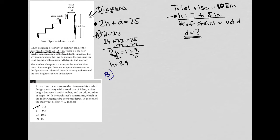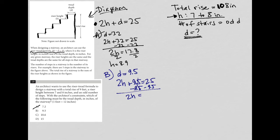Let's try answer choice B. Answer choice B says D is equal to 9.5. Doing the same exact math, 2H plus 9.5 equals 25. Subtracting 9.5 from both sides gives 25 minus 9.5, which equals 15.5. Dividing both sides by 2, H equals 7.75. Now 7.75 is within the range of values for H, so that's a good thing.